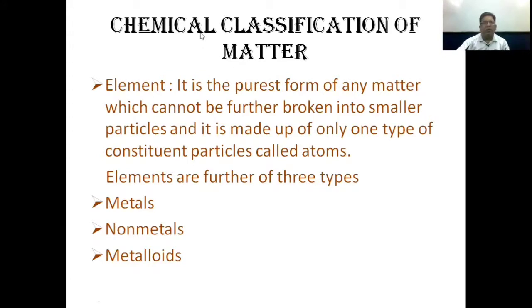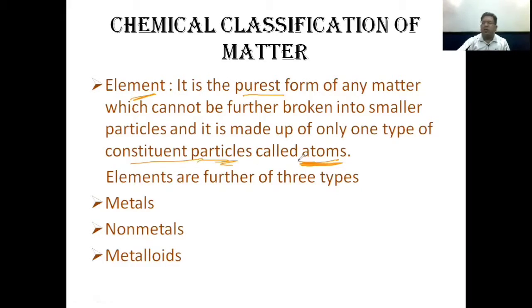What is an element? It is the purest form of any substance which cannot be further broken into smaller particles. It is made up of only one type of constituent particles, and these constituent particles are called atoms. We have 118 elements in the modern periodic table, and elements are further of three types: metals, non-metals, and metalloids.